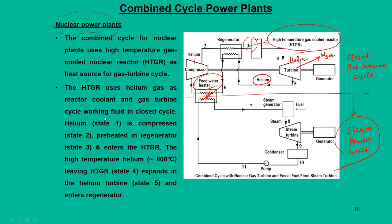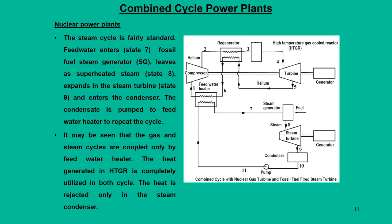Some workable numbers: helium normally operates at very high temperature — 800 degrees centigrade — and can expand to generate power through the gas turbine unit, which is then coupled to the steam cycle through the feed water heater. The heat generated from the HTGR is completely used by both cycles and heat rejected is only in the condenser. This particular arrangement is called a combined cycle with nuclear gas turbine and fossil fuel fired steam turbine unit.